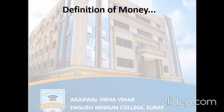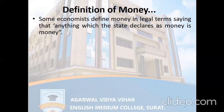There are other definitions of money which are more popular. Some economists define money in legal terms, saying anything which the state declares as money is money. Here the word 'state' means government or the financial authority. So anything backed or supported by the government will be considered as money. The paper currency we use today is also known as legal tender money because it is legally backed by the government.